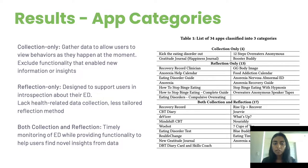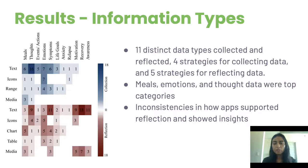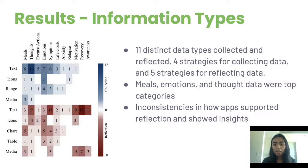We found 11 distinct data types collected and reflected, four strategies for collecting data, and five strategies for reflecting data. Of the 11 categories, meals, emotions, and thought data were the most collected data types. Collecting and displaying meal information is especially foundational as it can help individuals become aware of their eating habits and associated experiences to make improvements. However, one app showed a BMI chart, and it is important not to include such metrics that may cause fixation on weight, as it is a trigger for disordered weight control behavior.